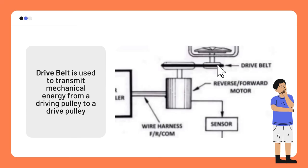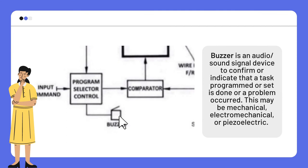Drive belt: it is used to transmit mechanical energy from a driving pulley to a drive pulley. Buzzer: it is an audio sound signal device to confirm or indicate that a task programmed or set is done, or that a problem occurred. This may be mechanical, electromechanical, or piezoelectric.